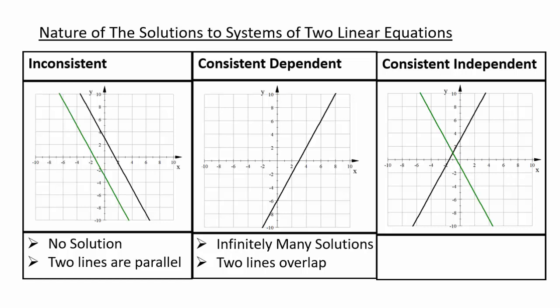Inconsistent means the lines are parallel. Consistent dependent means they're parallel but have the same y-intercept — in fact, all the points on one line belong to the other line. Consistent independent means you have a unique solution, and the solution is the point of intersection of the two lines.